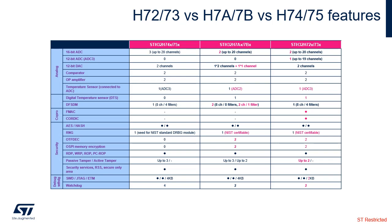Two accelerators have been added: the CORDIC co-processor accelerates certain mathematical functions, mainly trigonometric ones, and the FMAC accelerator performs arithmetic operations on vectors. The random number generator (RNG) is a NIST SP800-90B-compliant entropy source. The two embedded on-the-fly decryption units (OTF-DEC) allow the on-the-fly decryption of content stored in external OctoSPI memories, as described in application note AN5281. The OTF-DEC feature is only available for STM32H7-3 crypto devices. The STM32H7273 are single-CPU core devices, so only one independent watchdog and one window watchdog are included.